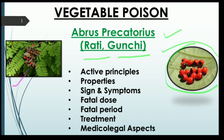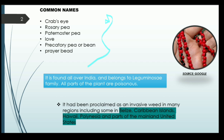This is how the leaves of this plant look like. To begin with, let us have a look at some of its common names which can be asked in your competitive examinations. It is commonly termed as crab's eye, because of the nature and appearance of the seeds. Then rosary pea — it is often used for purpose of worship and has great religious significance. Also known as paternoster pea, love pea, precatory pea or bean.